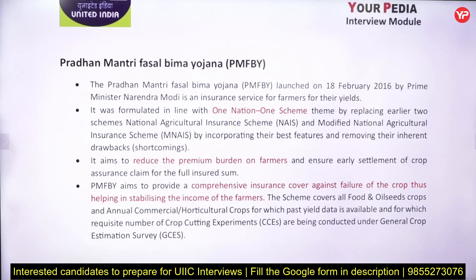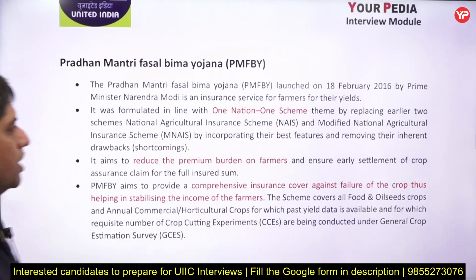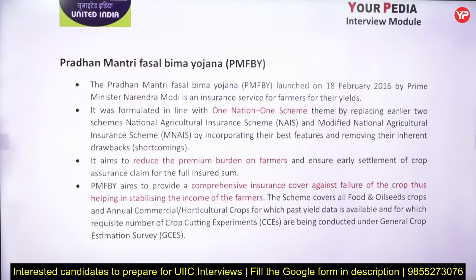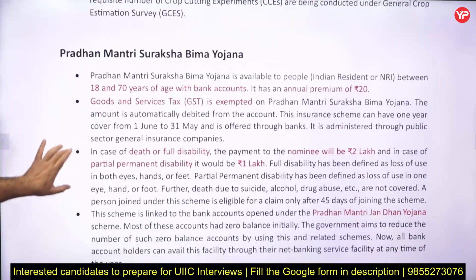Pradhan Mantri Fasal Bhima Yojana was launched in 2016 and was formulated in line with the 'One Nation, One Scheme' theme. Earlier, there were two schemes — the Agriculture Insurance Scheme and the Modified National Agriculture Insurance Scheme — which were merged to create this scheme. It reduced the premium burden on farmers and provided comprehensive insurance coverage in case of crop failure, to stabilize farmer income.